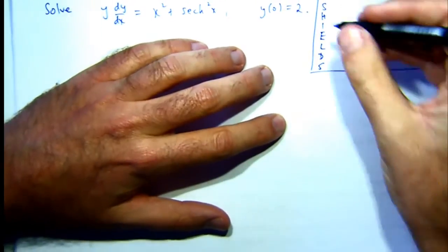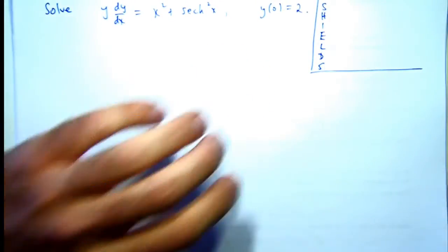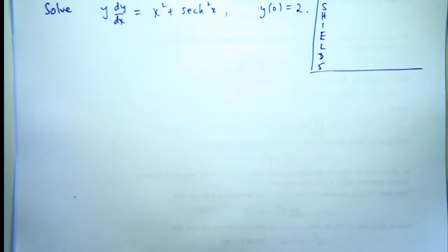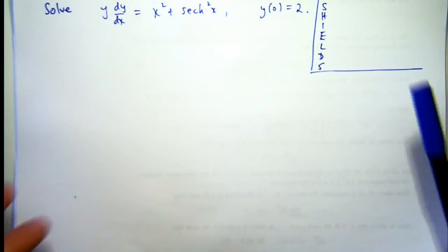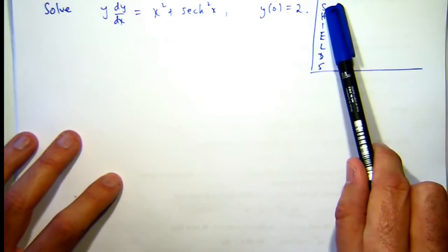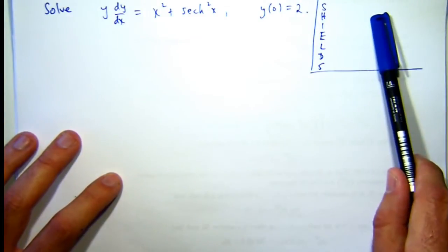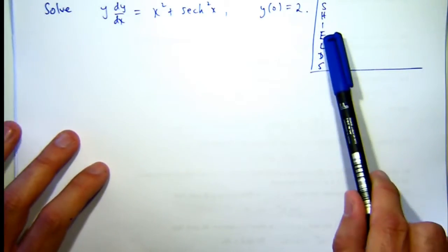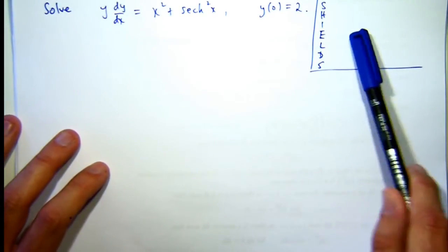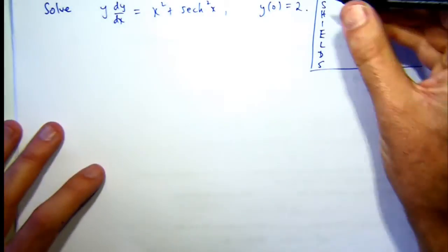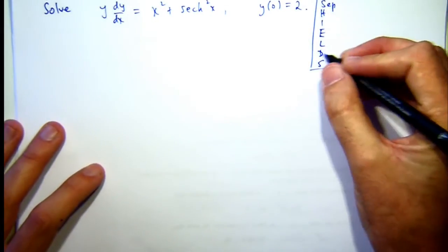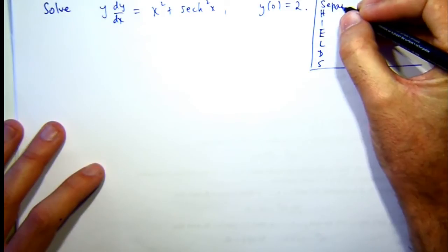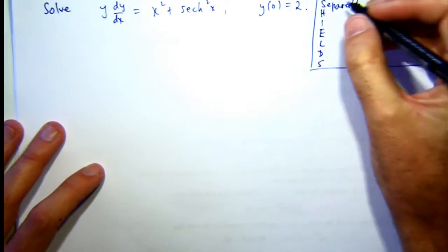SHIELDS. So each letter stands for a type of first-order differential equation, or something related to its solution method. The S stands for separable, the H stands for homogeneous, the I stands for, well, I'll leave the I for a minute, the E stands for exact, the L stands for linear, the D stands for direct integration.